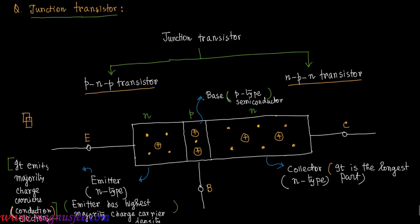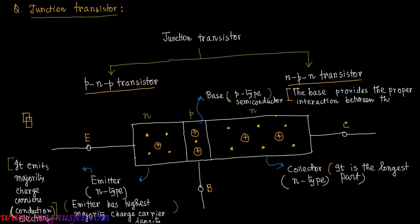The function of the P-type base is that it provides the proper interaction between the emitter and the collector.